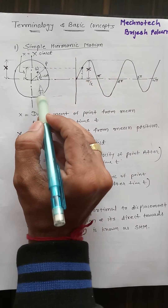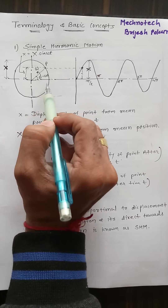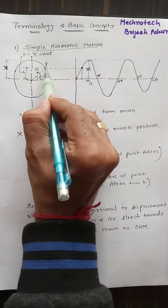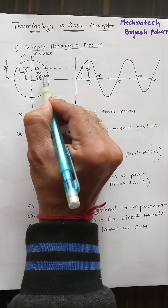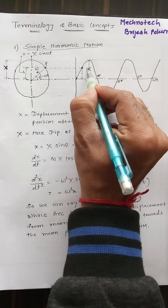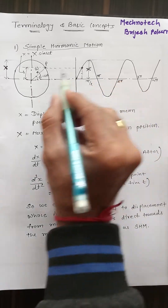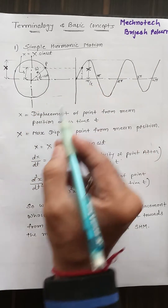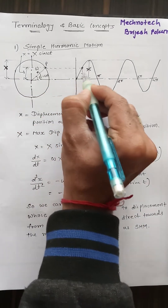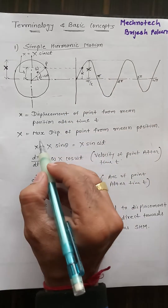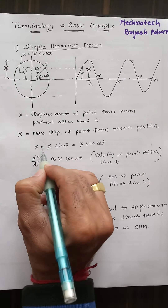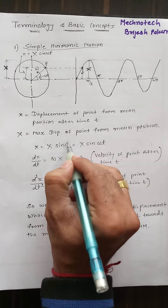From this figure you can see there is a point P which is moving around a circle with uniform angular velocity omega. Point P at a particular time t has angle theta equal to omega·t. This is the graph for simple harmonic motion. Here, capital X is the maximum amplitude traced by point P, and small x is the displacement of the point from the mean position after time t. This distance small x is equal to capital X·sin(theta).